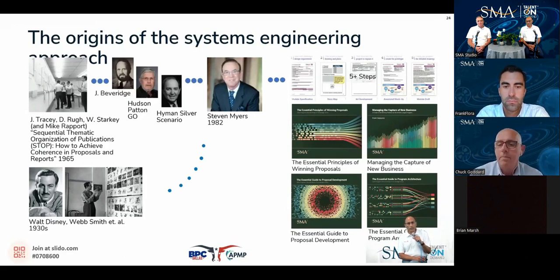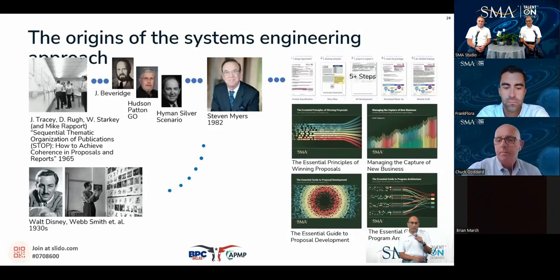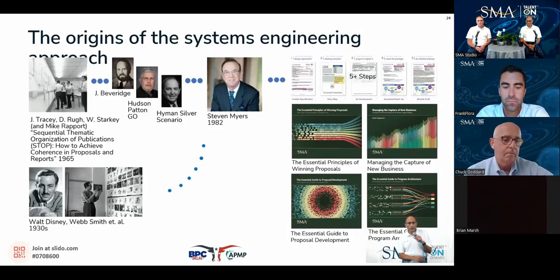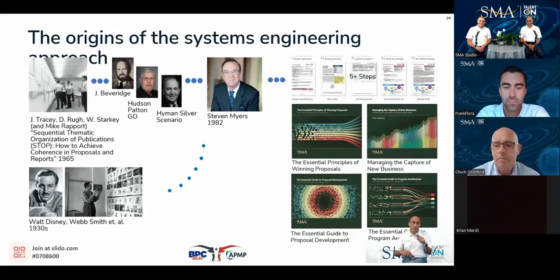STOP introduced a single but groundbreaking idea: thematic quantitization — a central tenant of the SMA process. They broke the proposal down into modules, typically just several pages long. The module structure could in fact be different than the outline structure of a proposal. While a traditional outline is topically or subject-based, a module is thematically coherent — a single theme. So a module could comprise several sections of an outline. In STOP, a module is typically a two-page spread.